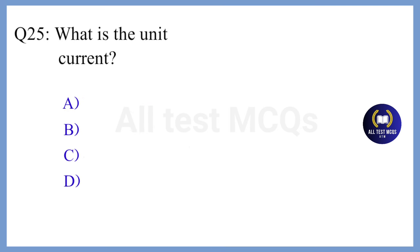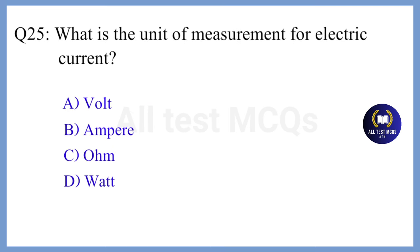Question 25. What is the unit of measurement for electric current? The correct answer is Option B. Ampere.